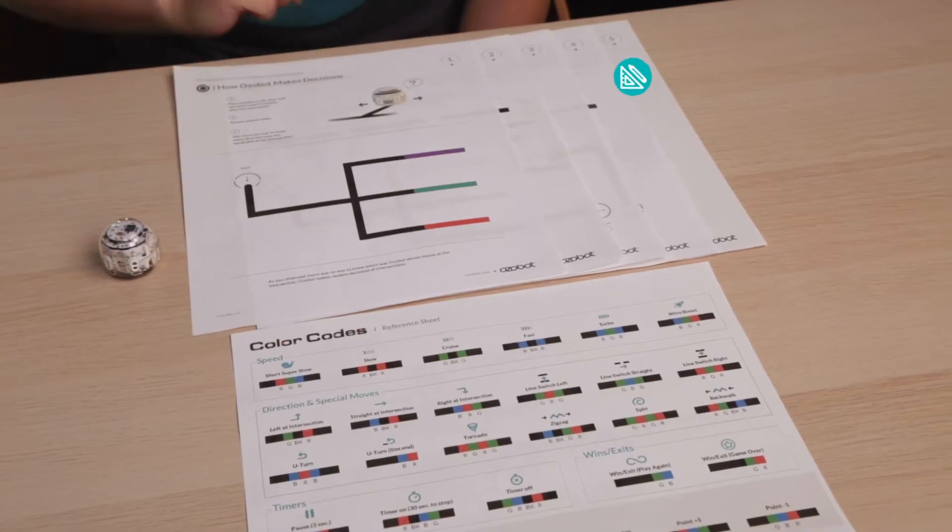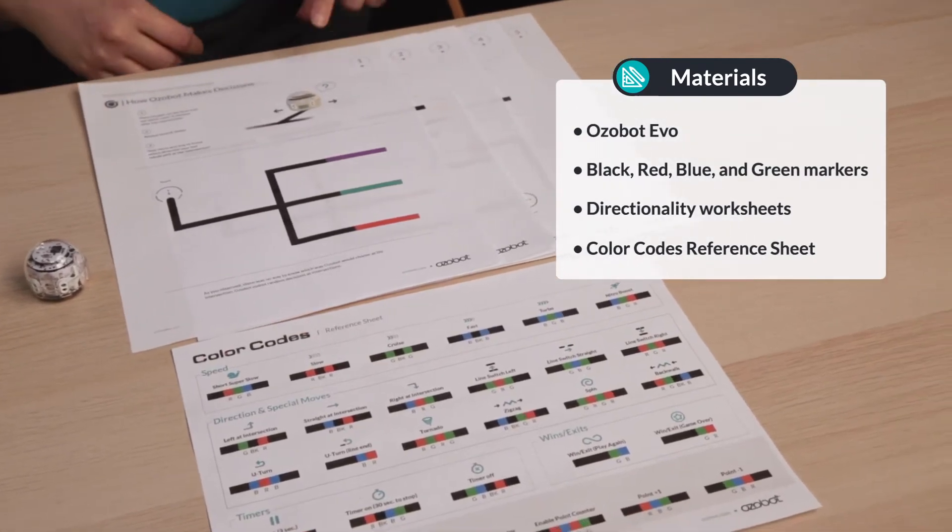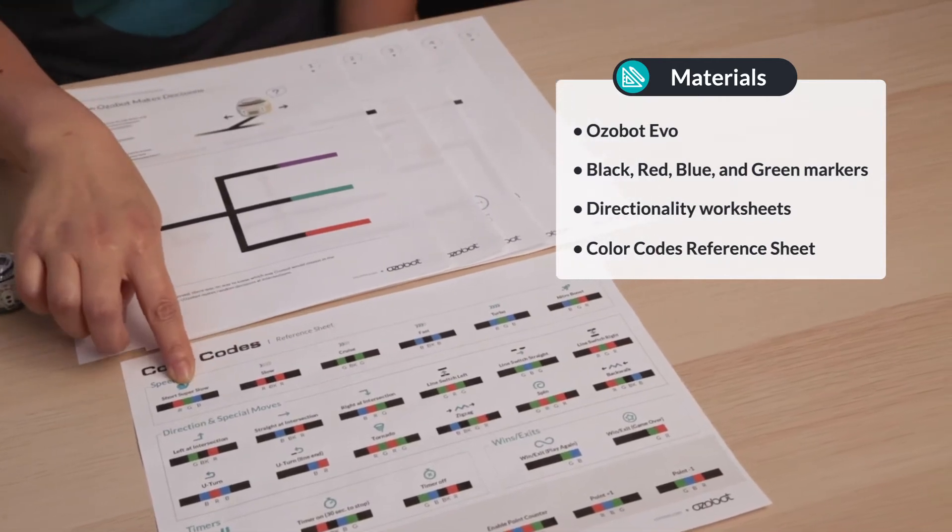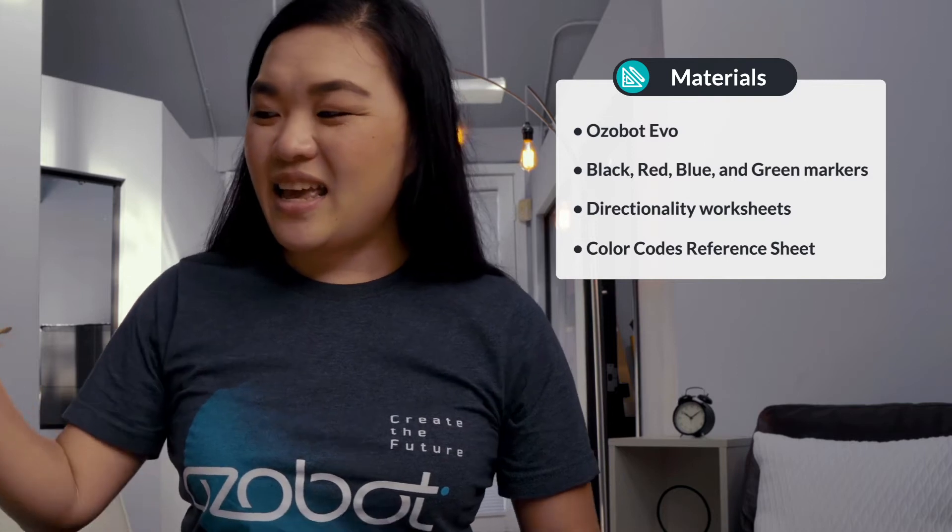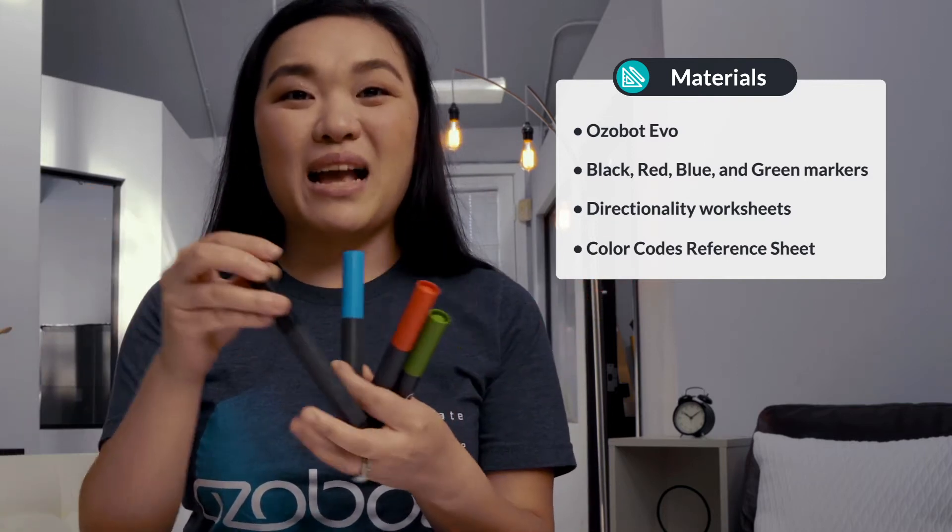For today's lesson, you will need your Introduction to Color Codes Directionality Worksheets, make sure you have all five pages, a color code reference sheet, an ozobot, and a green, red, blue, and black marker.